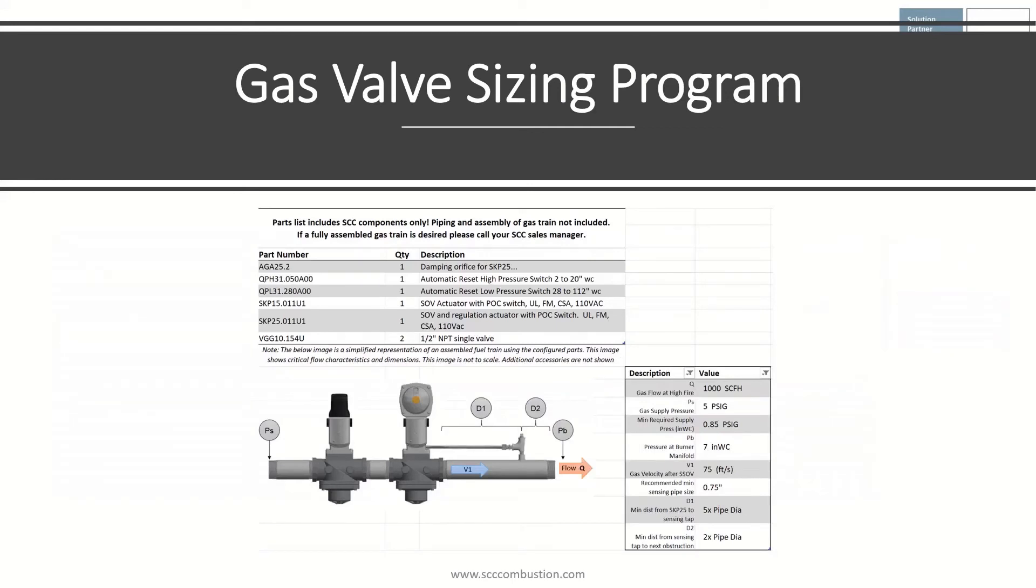Here is an example report from the program. It lays out the bill of material with a schematic drawing. There's engineering data on the right to get a feel for the minimum required pressure. Knowing the minimum required pressure helps you get a feel for how much wiggle room is available in terms of available pressure.